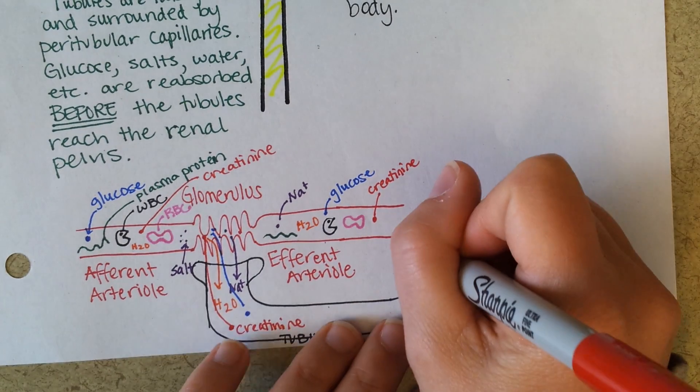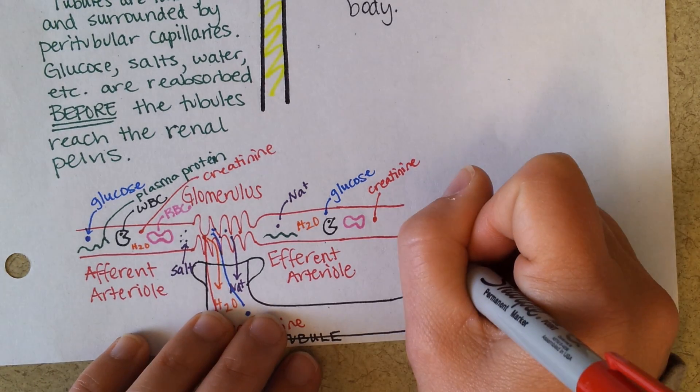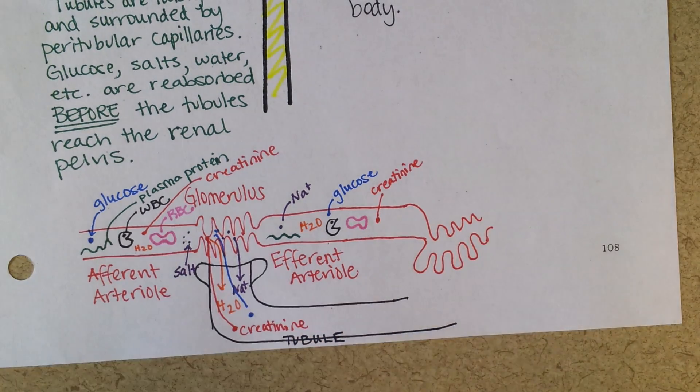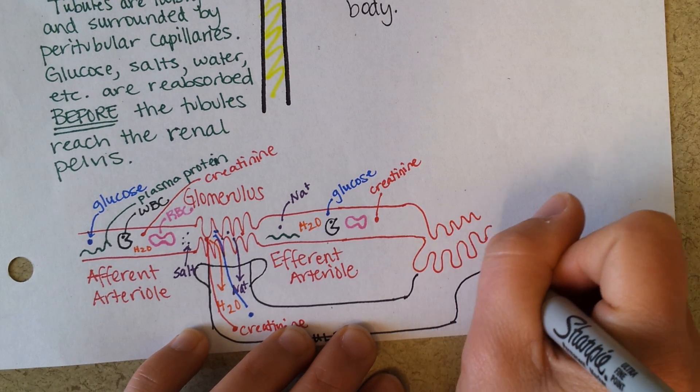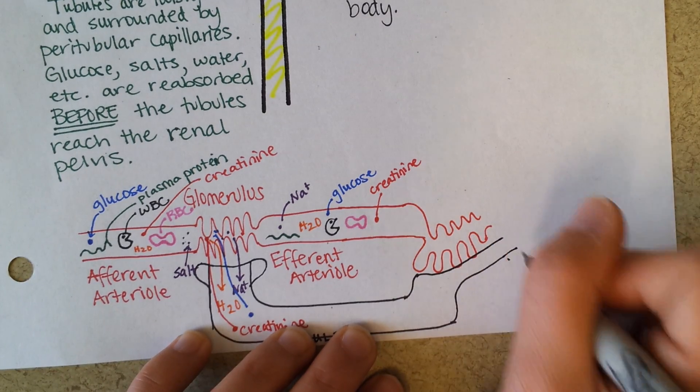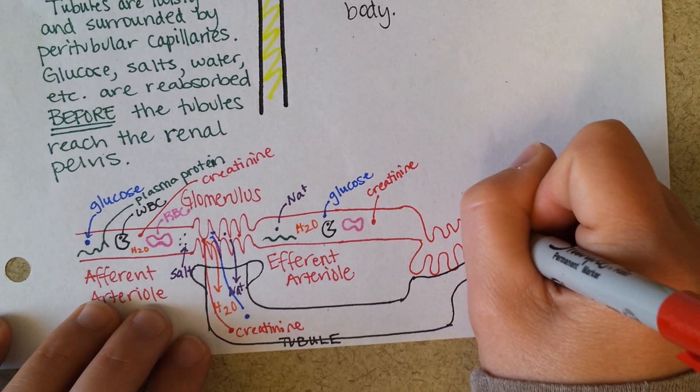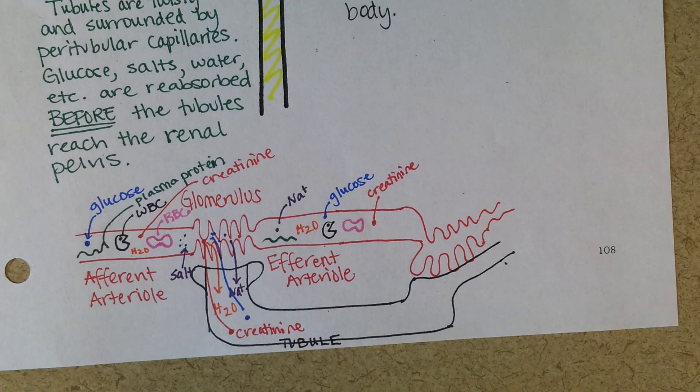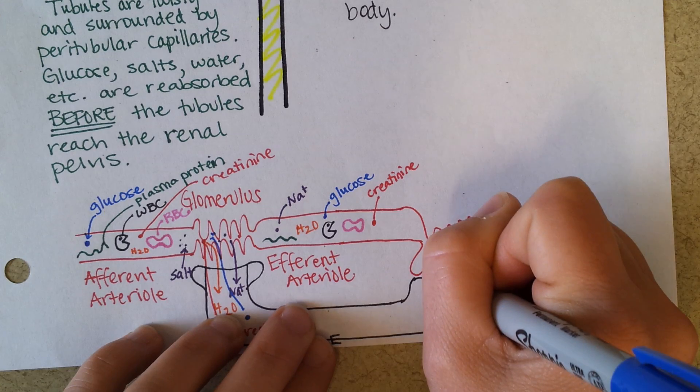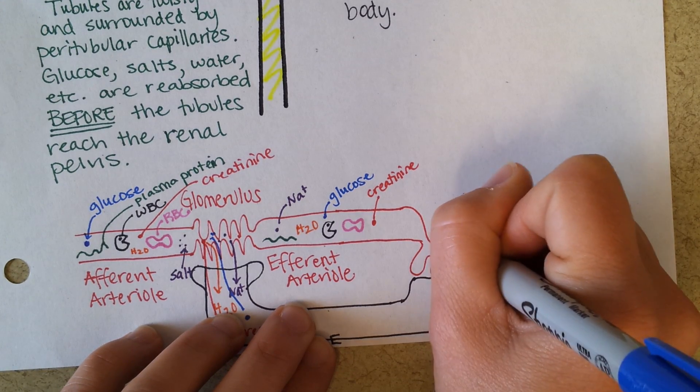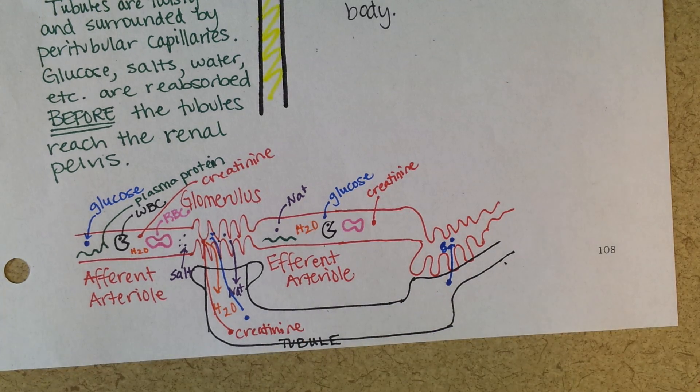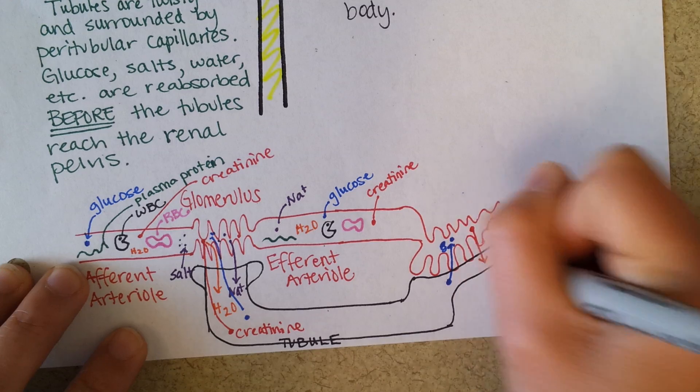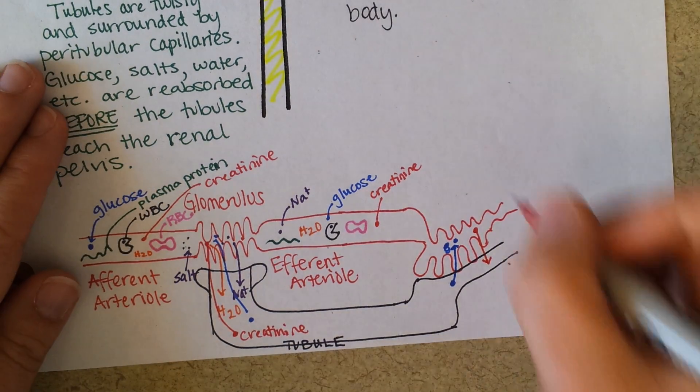Then we get to another capillary bed. It goes right next to the tubule. Okay, and then at this point, you can have things going the other direction. So see how the filtration, everything went this way? Well, all of the glucose that got into the filtrate should go back. So put that blue dot, remember the blue dot is glucose. So all of the glucose should be reabsorbed. And any creatinine that's still around should be completely secreted.